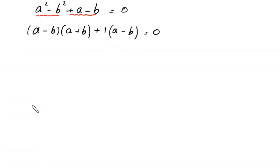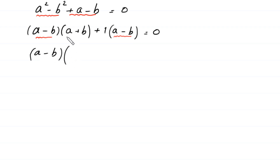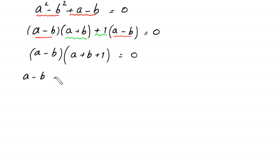As you can see, (a minus b) is a common factor, so we factor it out to get: (a minus b)(a plus b plus 1) equals 0. From here, either a minus b equals 0, or a plus b plus 1 equals 0.